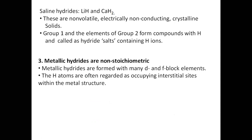The third type is metallic hydrides. Metallic hydrides are non-stoichiometric — meaning, as we just saw the exact stoichiometric proportions for calcium-hydrogen, lithium-hydrogen, sodium-hydrogen, and magnesium-hydrogen (1:1 or 1:2), metallic hydrides do not follow those fixed ratios. They are also called non-stoichiometric hydrides, and they are formed by D block and F block elements.